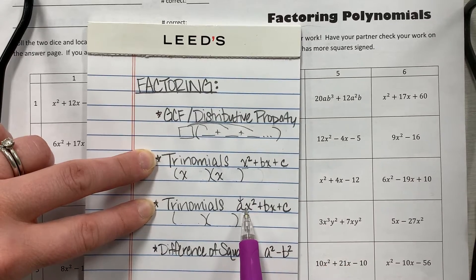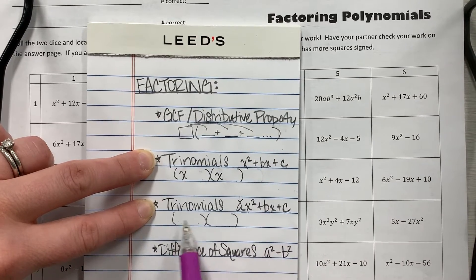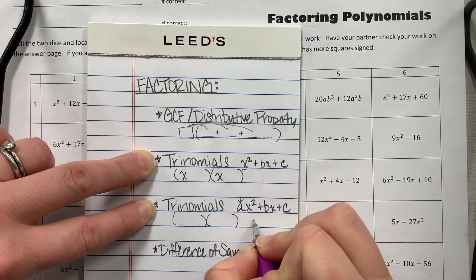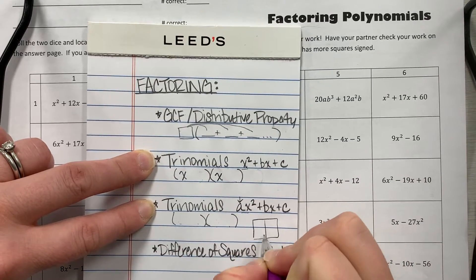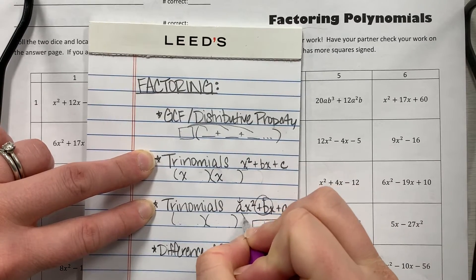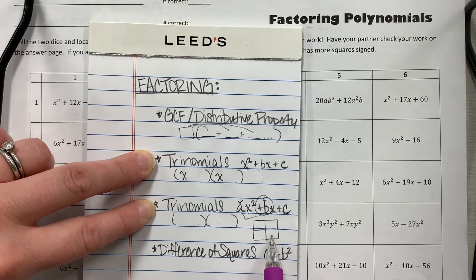If there is a number in front of x squared, then you don't necessarily know what these two front pieces are going to be, and so that's where we have to go through that full box process and say, oh okay, it's going to add to make the middle and it's going to multiply to make the front times the back and actually follow that process.